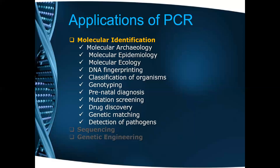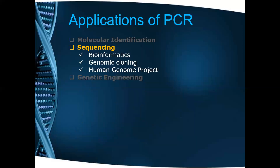Moving on to the next step, that is sequencing. The next important application of PCR is sequencing. The main aspects involved are bioinformatics, genomic cloning, and the human genome project. Sequencing means how we can know about the perfect sequence of nitrogenous bases or the gene sequencing. For that reason, PCR is very important. Until and unless you magnify the amount of DNA present in a particular sample, you cannot go for sequencing. The tools required are bioinformatics, genomic cloning, and the human genome project, which also requires huge knowledge of sequencing.